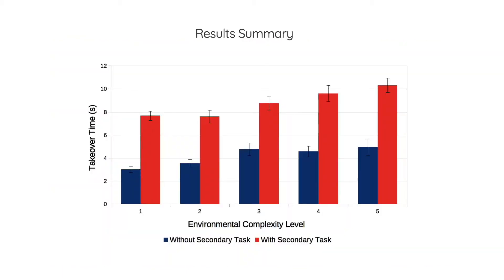To summarize the results — more details can be found in the paper — we found a strong relation between environmental complexity and takeover time. The effects are still significant when there is no secondary task, and there is also a strong relation between the secondary task and takeover time. Thank you.